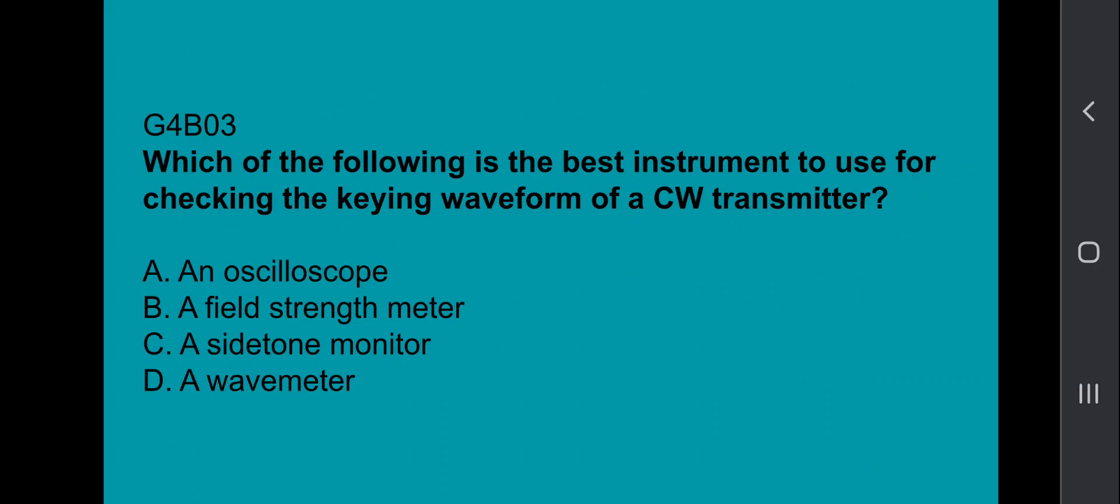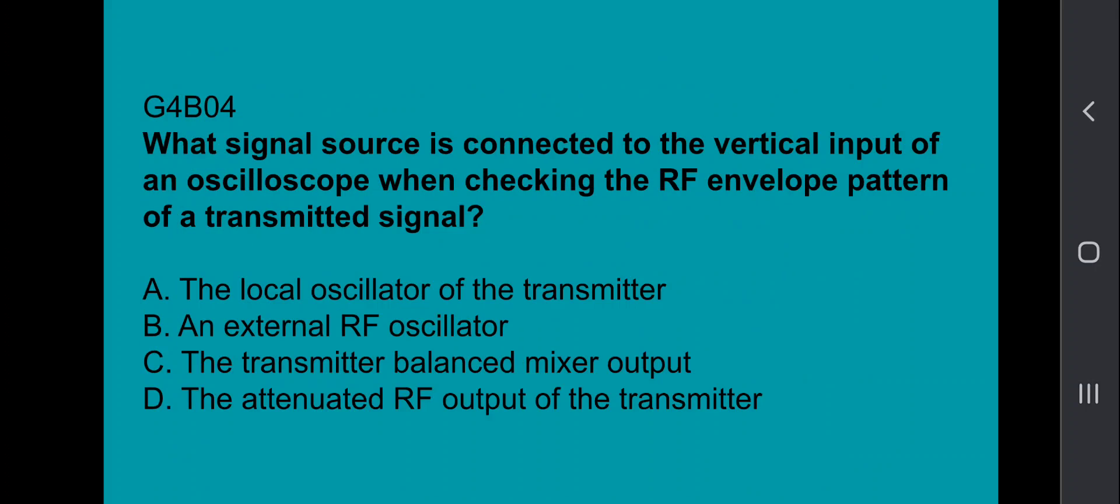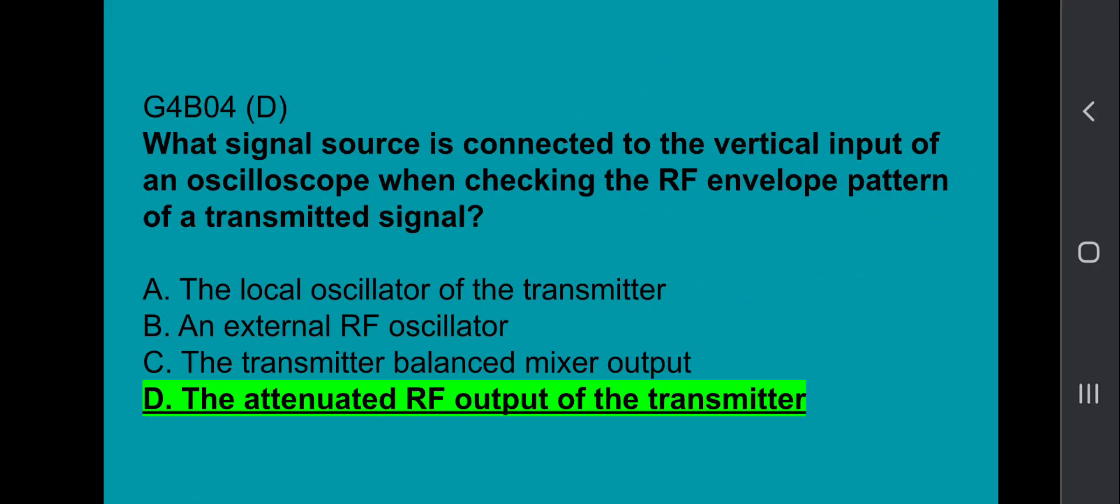G4B03, which of the following is the best instrument to use for checking the keying waveform of a CW transmitter? An oscilloscope. G4B04, what signal source is connected to the vertical input of an oscilloscope when checking the RF envelope pattern of a transmitted signal? That's the attenuated RF output of the transmitter.